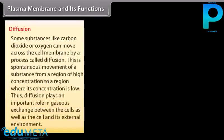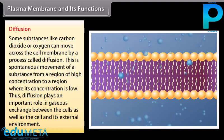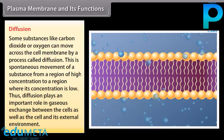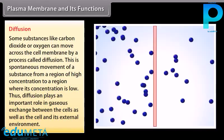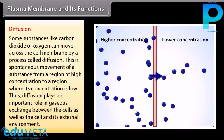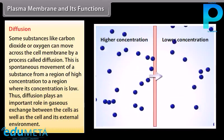Diffusion: Some substances like carbon dioxide or oxygen can move across the cell membrane by a process called diffusion. This is the spontaneous movement of a substance from a region of high concentration to a region where its concentration is low. Diffusion plays an important role in gaseous exchange between cells as well as between the cell and its external environment.